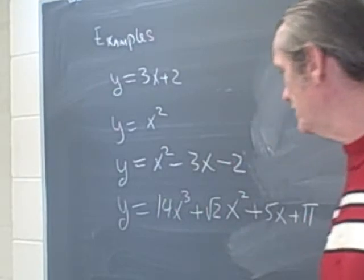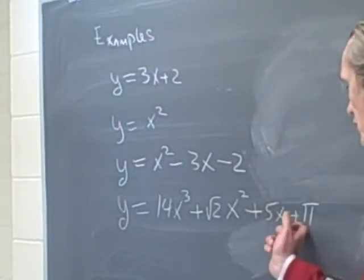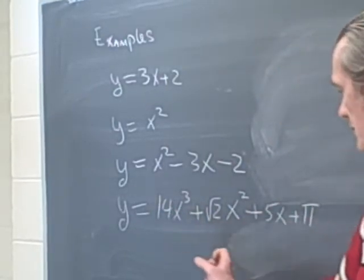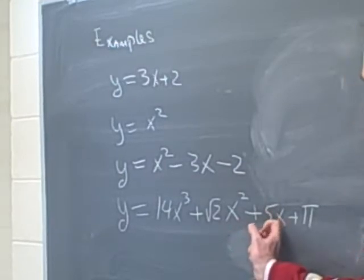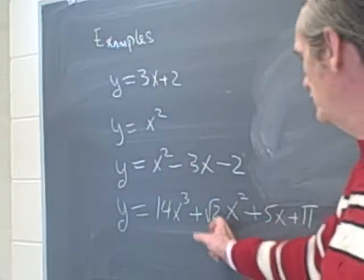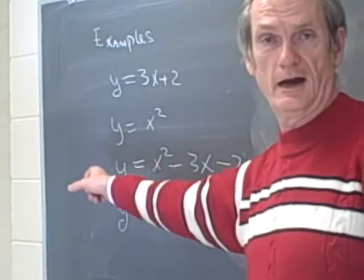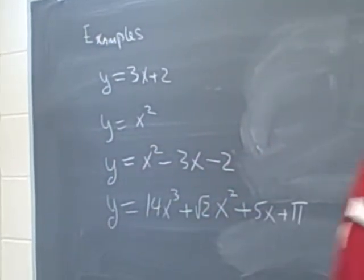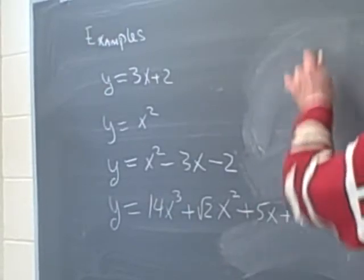And what makes all these things polynomials is our coefficients could be arbitrary real numbers. Our variables x appear in powers of 0, 1, 2, 3, 4, and higher powers. And, in general,